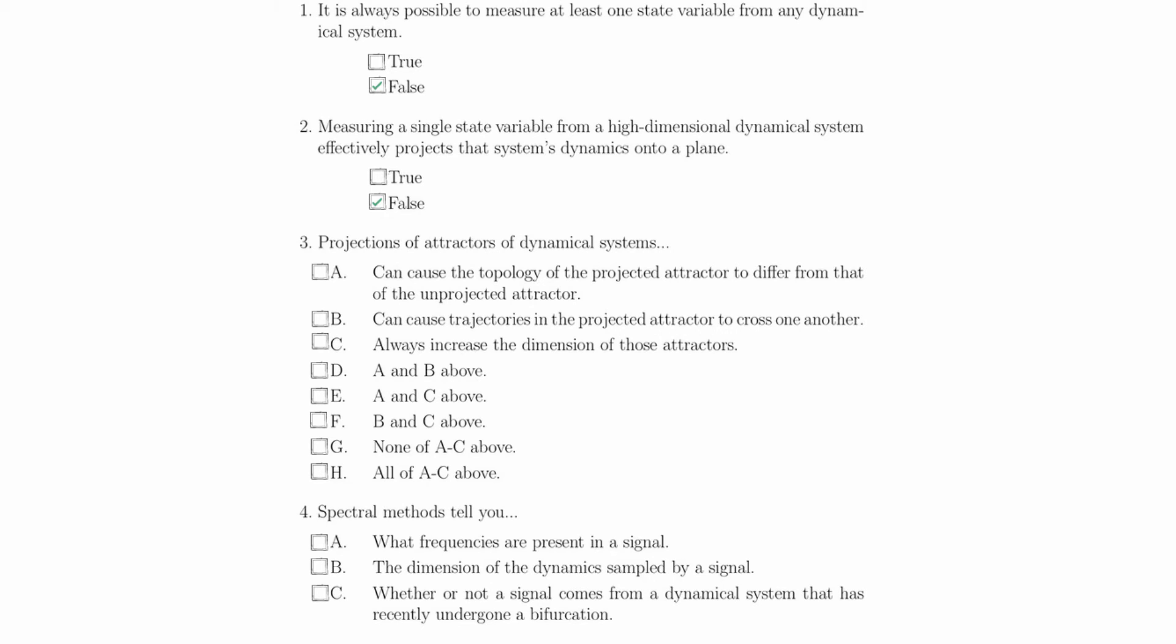Imagine any periodic orbit, for example, or periodic trajectory that forms a loop in a three-dimensional state space. There is at least one direction and projection that would cause this trajectory to cross itself.